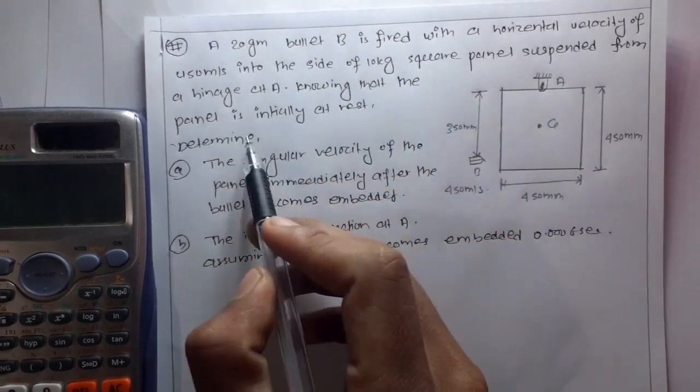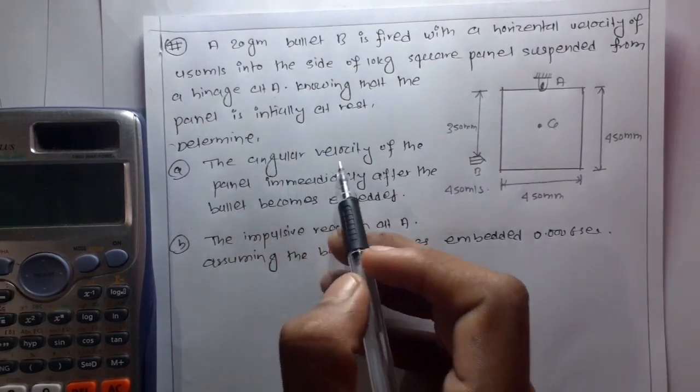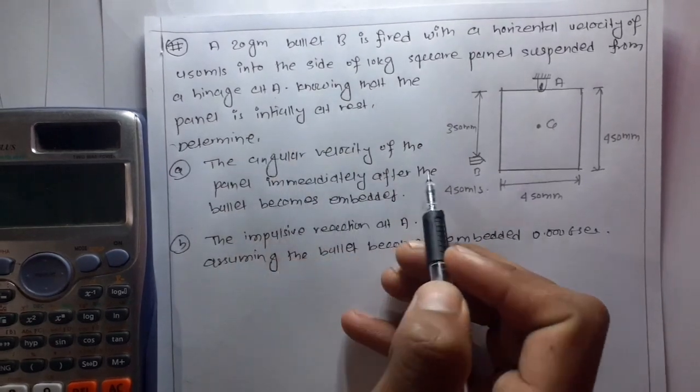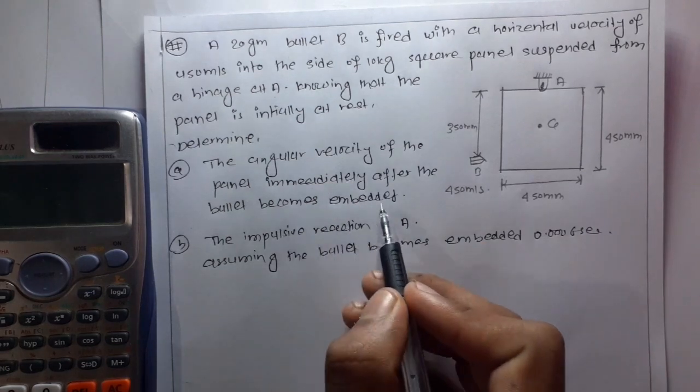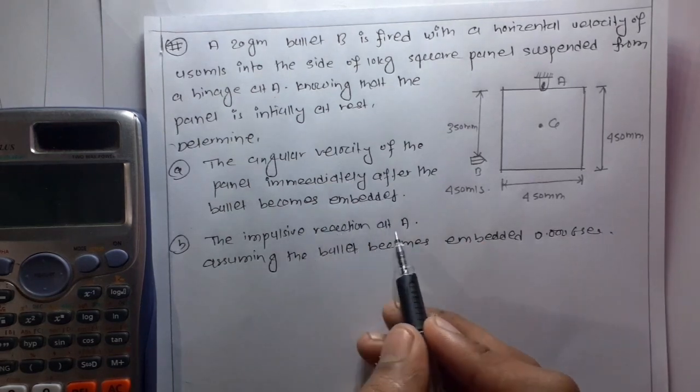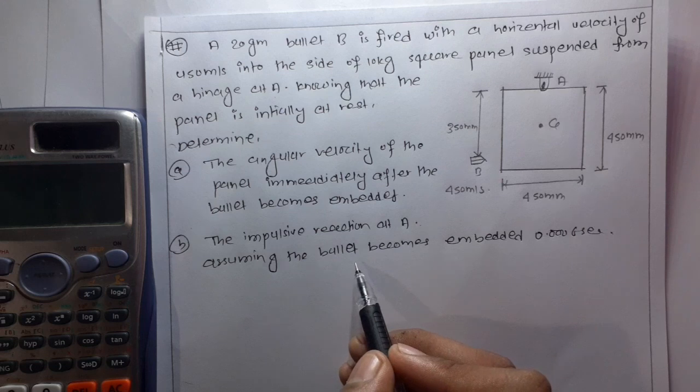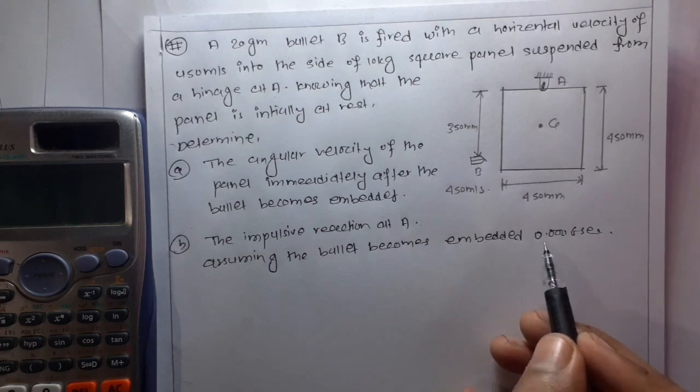Knowing that the panel is initially at rest, determine the angular velocity of the panel immediately after the bullet becomes embedded and the impulsive reaction at A, assuming the bullet becomes embedded in 0.006 seconds.